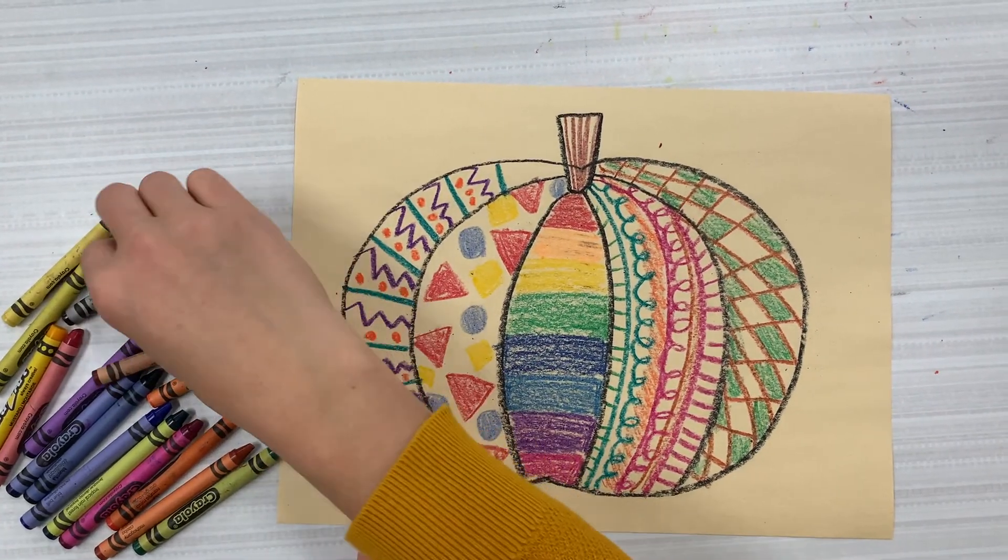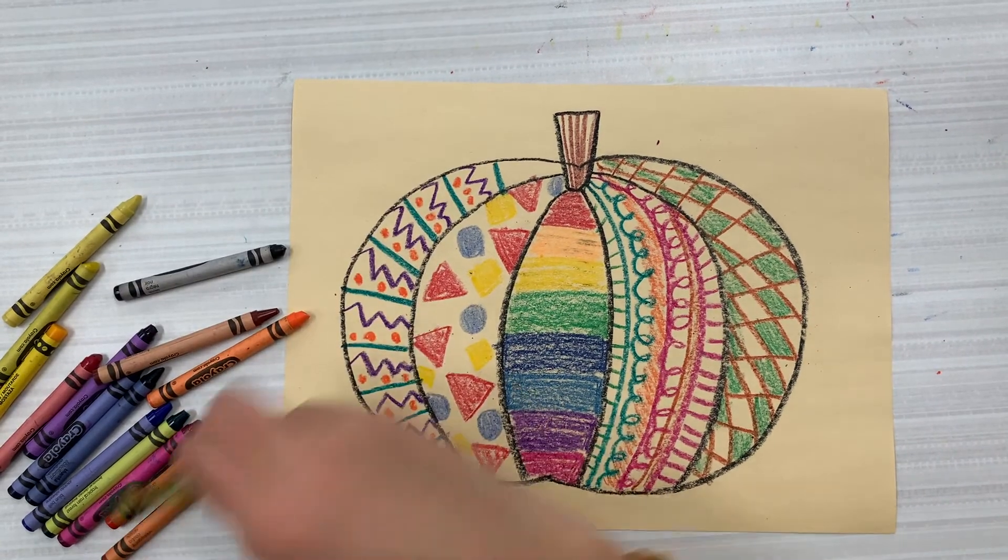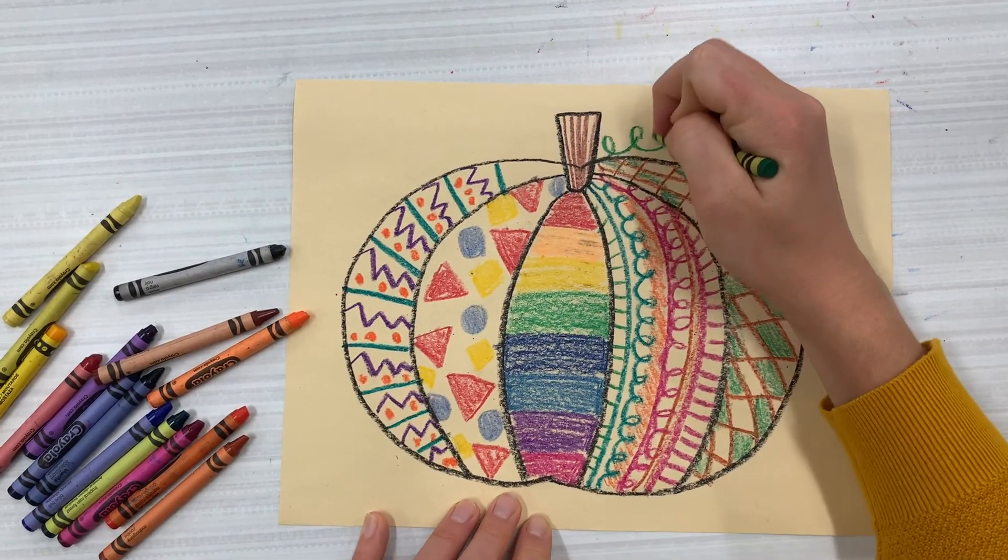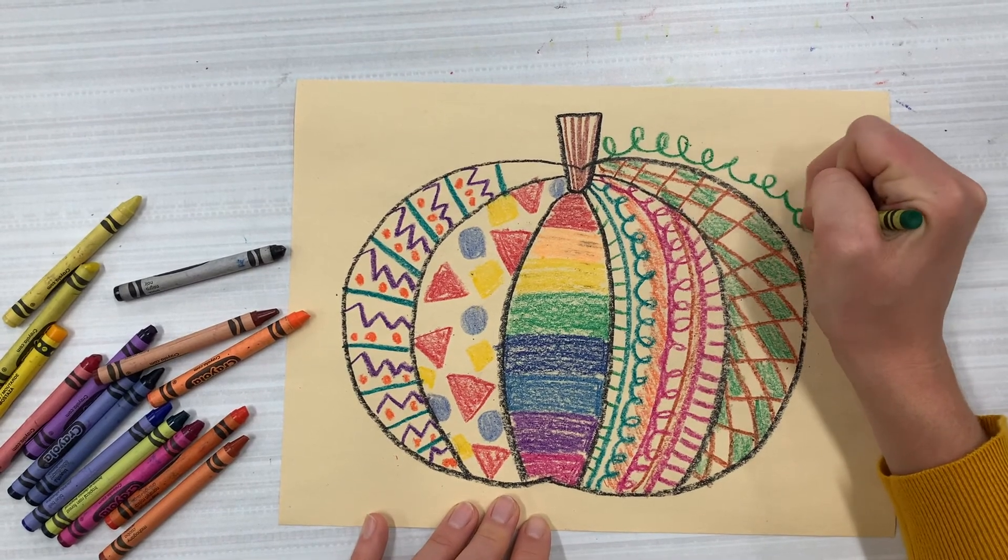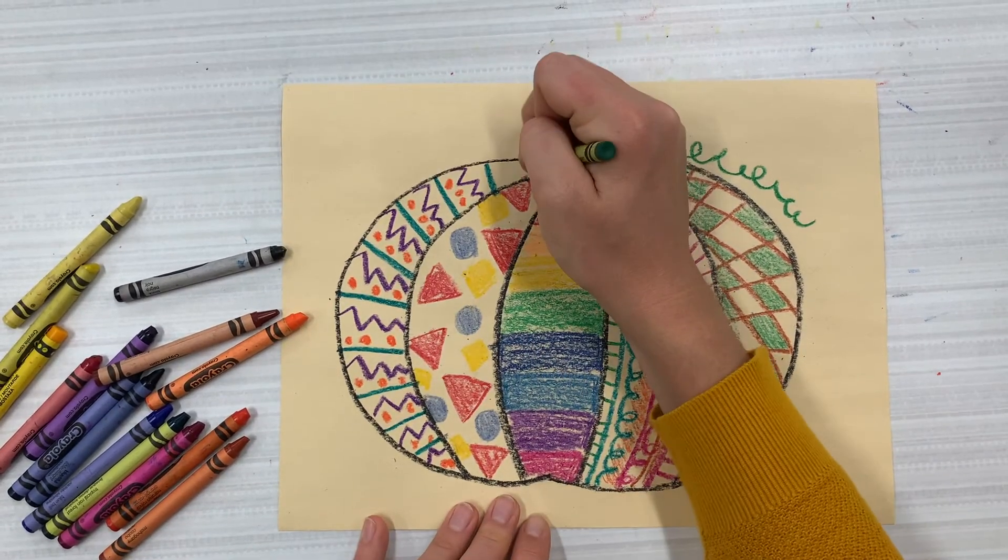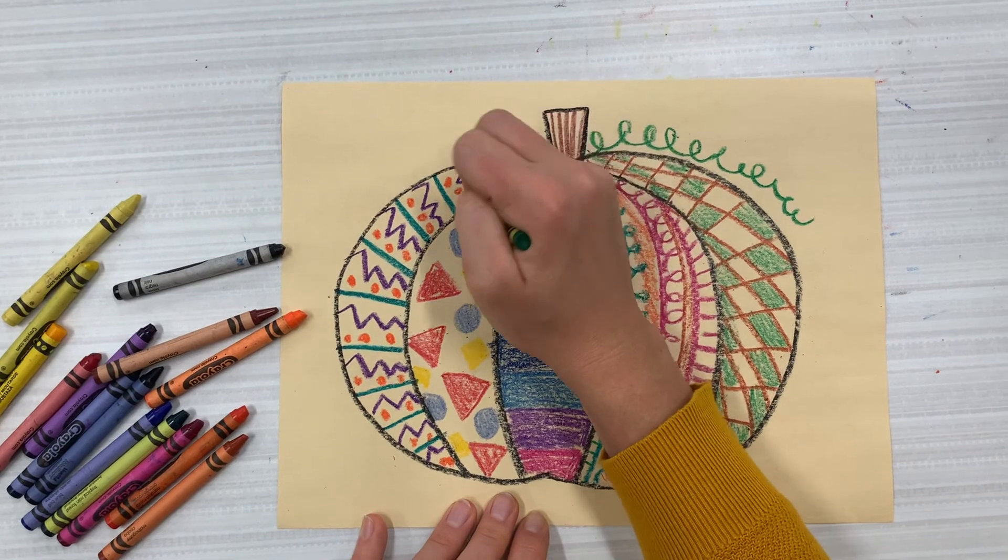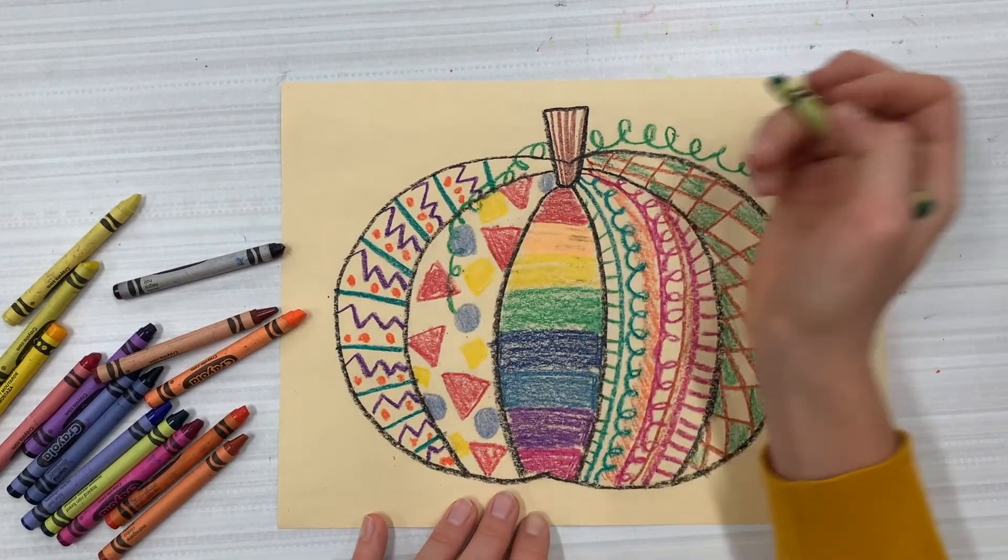One last fun thing you can do is you can add the vines. So sometimes you might see pumpkins have these curly little vines which are fun. So that curly line is that loopy line we learned.